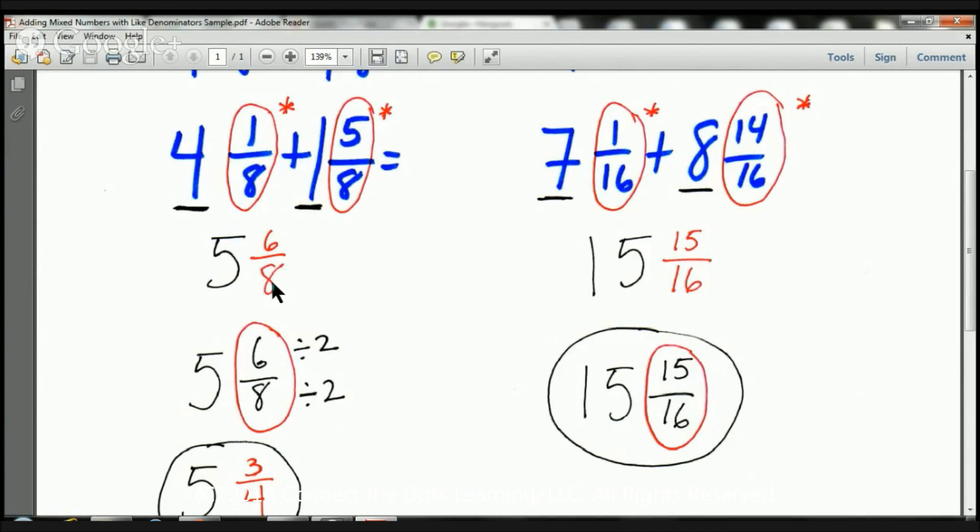So that's going to be an 8 right there. Then I'm going to add the numerators, 1 plus 5, and 1 plus 5 is 6. And there you have it, 5 and 6 eighths. The next question I have to ask myself is can I reduce this fraction, and that's what we're going to be doing down here.